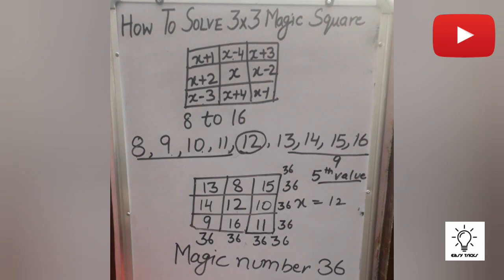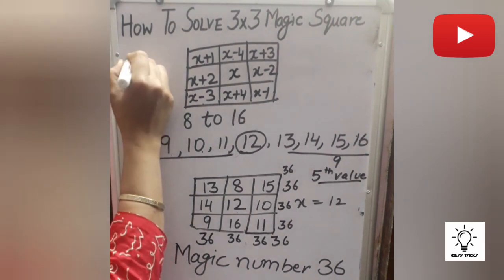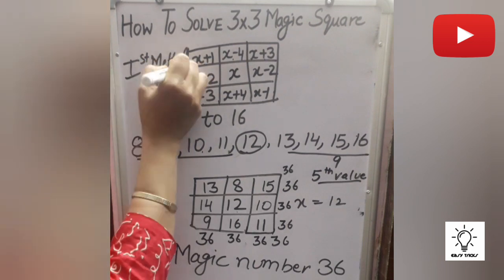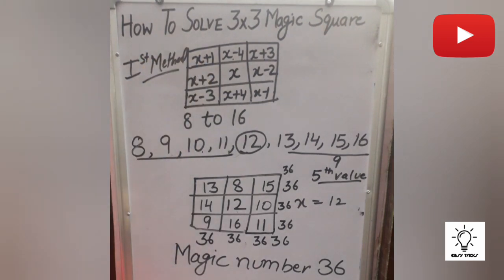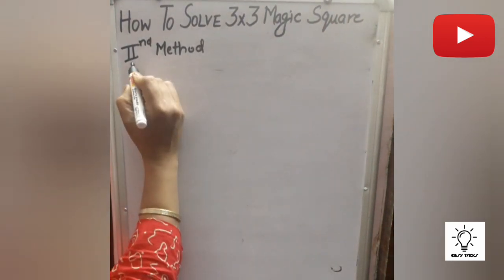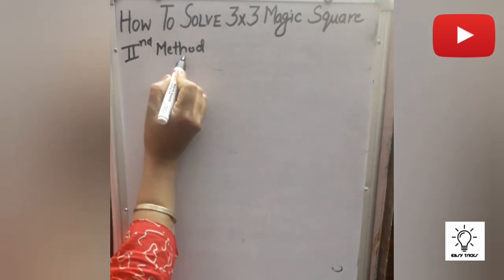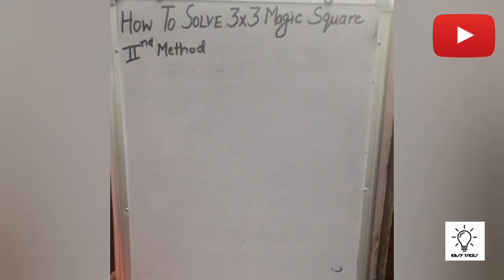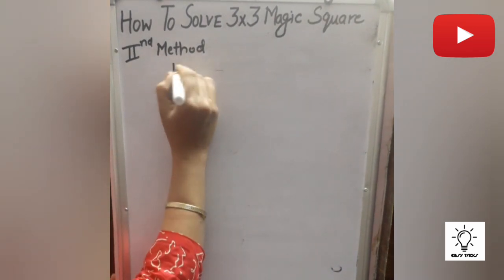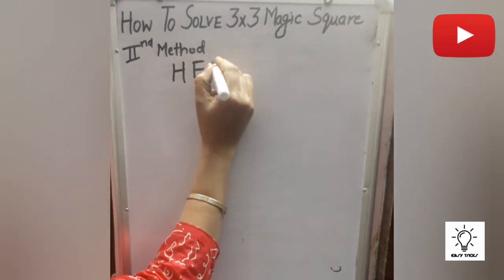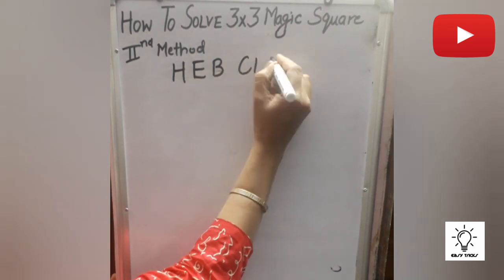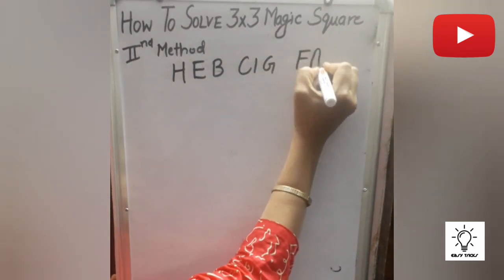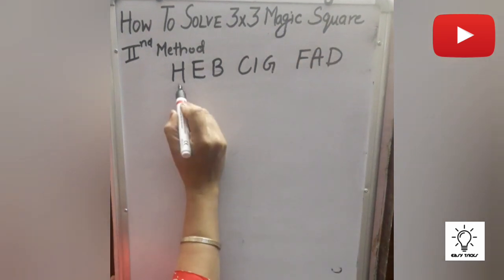I will tell you the second method also. This is the second method to solve a 3 by 3 magic square. The formula is: Hip, Sig, Fad — F-A-D, fad. You have to learn this: Hip, Sig, Fad.